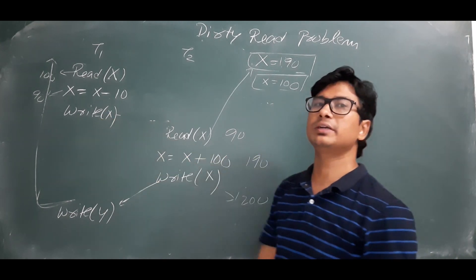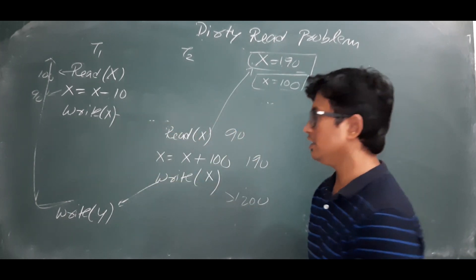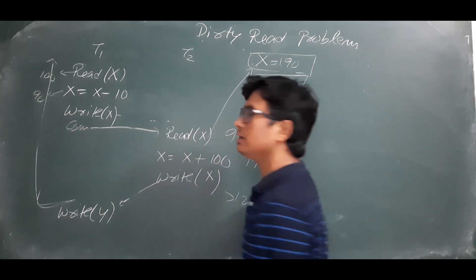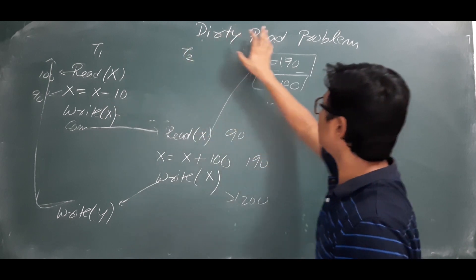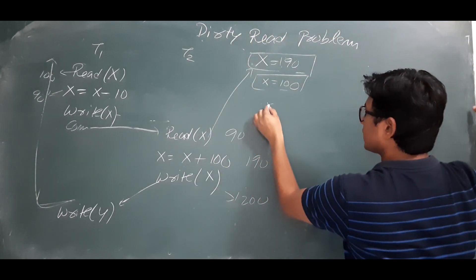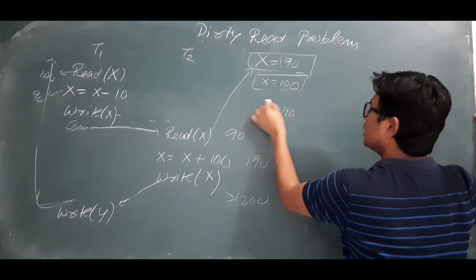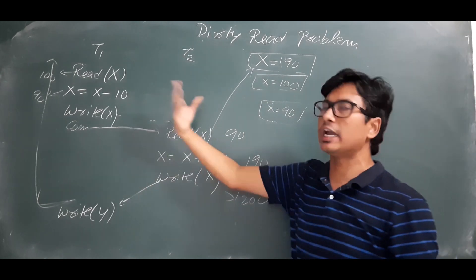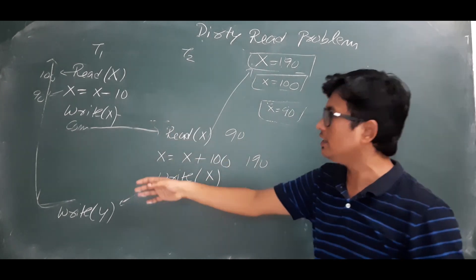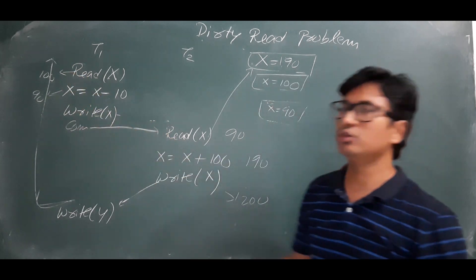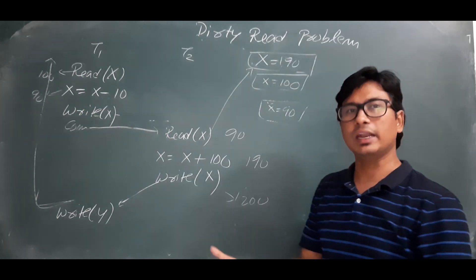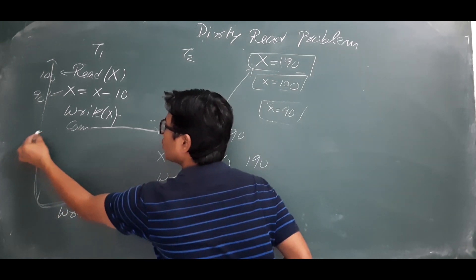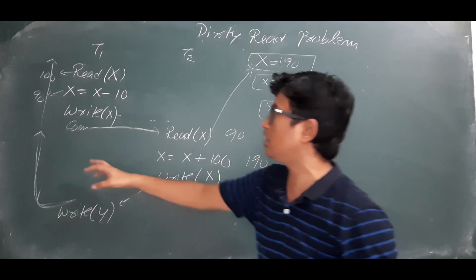Why did this problem come? We can say that T2 read the value from an uncommitted transaction. If there had been a commit operation in T1 before T2 read, then x as 90 would have been saved in the database permanently. Once saved permanently, even if T1 rolled back, it would only roll back up to the commit operation.